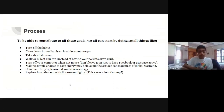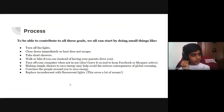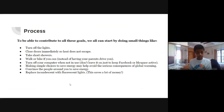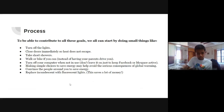What is the process? To be able to contribute to all these goals, you can all start by doing small things: turn off the lights, close doors immediately so heat does not escape, take short showers, walk or bike if you can instead of having your parents drive you, turn off your computer when you are not using it. Making simple choices to save energy may help avoid serious consequences of global warming. Convince the people around you to save energy. Replace incandescent with fluorescent lights — this saves a lot of money.